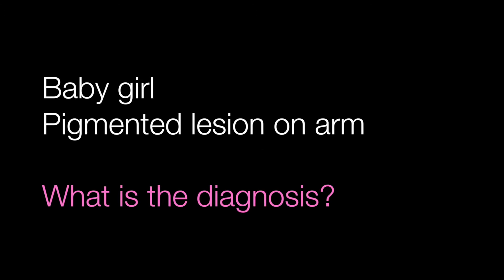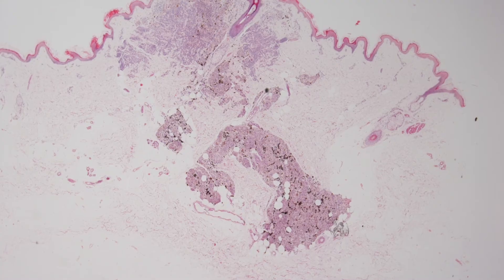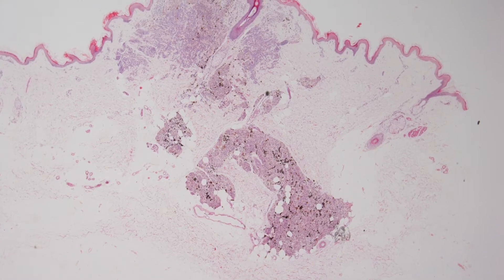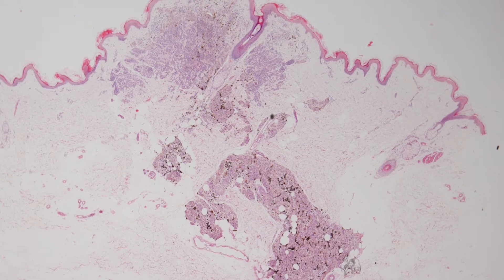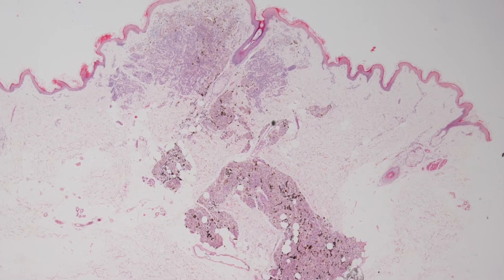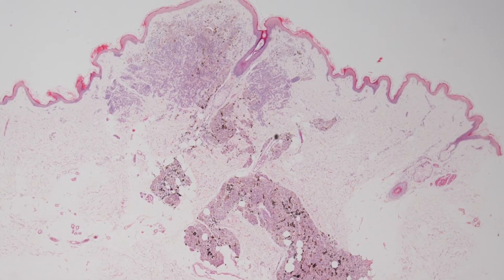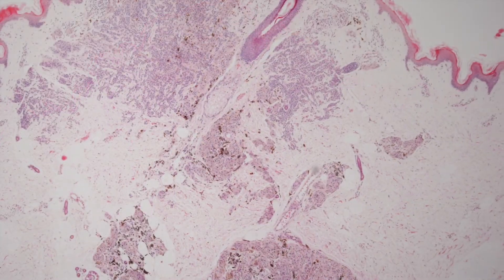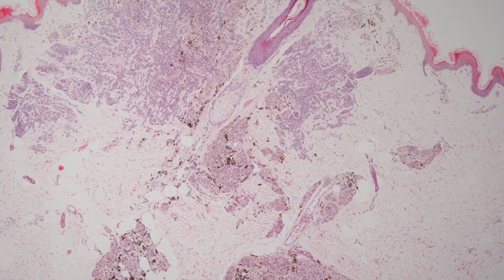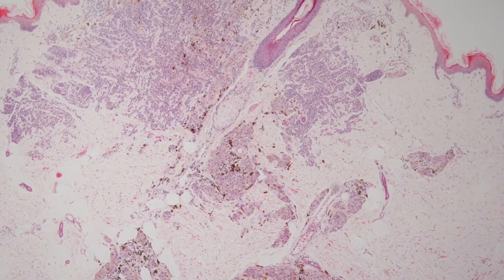Case number three is a pigmented lesion on the arm from a baby girl. What is the diagnosis? Here is a low power view and here are some higher power views of the lesion.